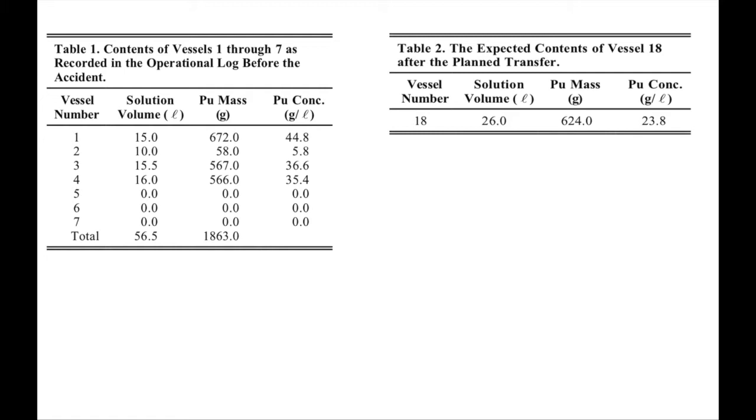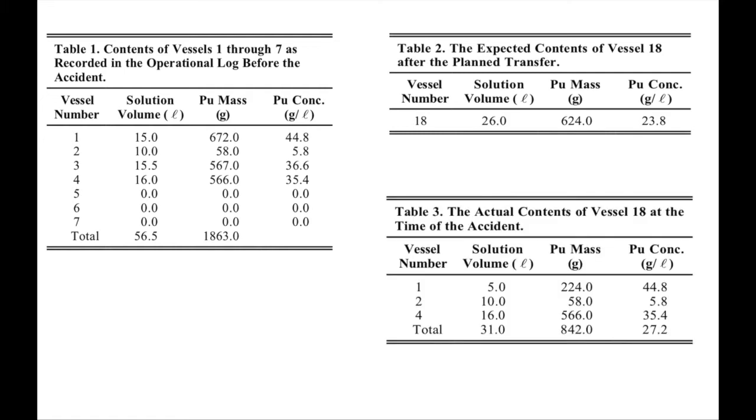And what the operators didn't know is that an additional 5 liters of solution containing 224 grams of plutonium had already been transferred to tank 18 at the start of their shift. This transfer was not recorded in the transfer logbook, so they didn't know that it had taken place.